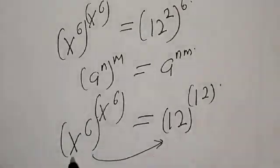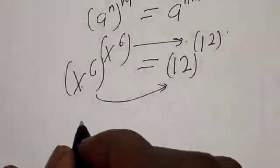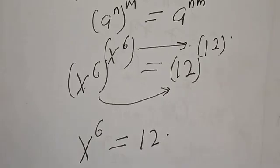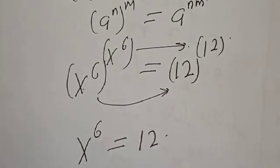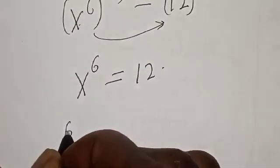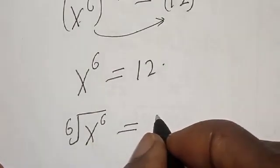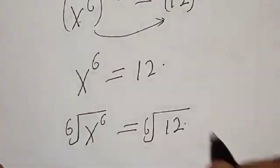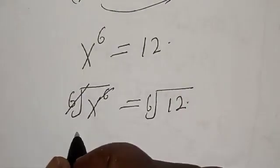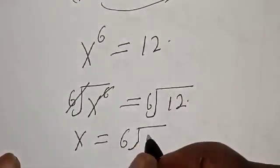By comparing the two sides, we have s raised to the power of s raised to the power of 12. Therefore, taking the 6th root of both sides: the 6th root of s raised to the power of s raised to the power of 4 is equal to the 6th root of 12. So s is equal to the 6th root of 12.